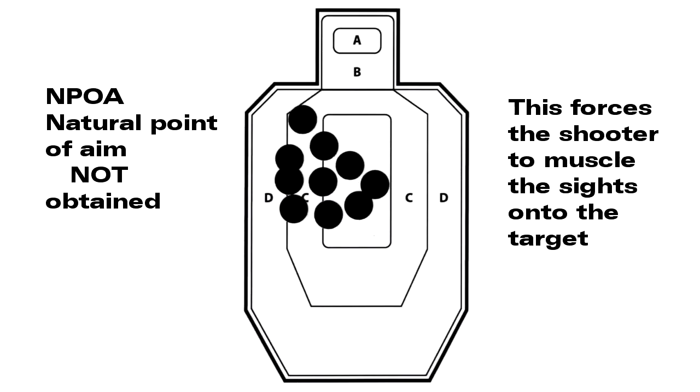Sample target number eight. Probable causes: number one, natural point of aim not obtained. When shooting prone, forcing the shooter to muscle the sights onto the target.